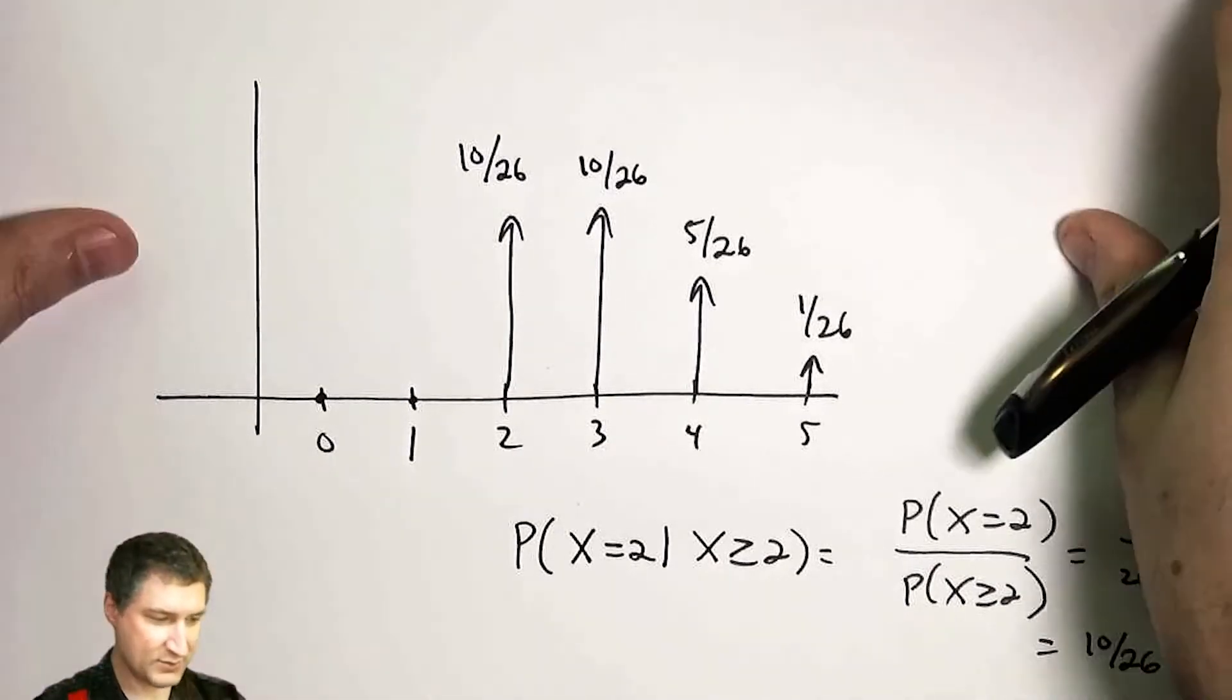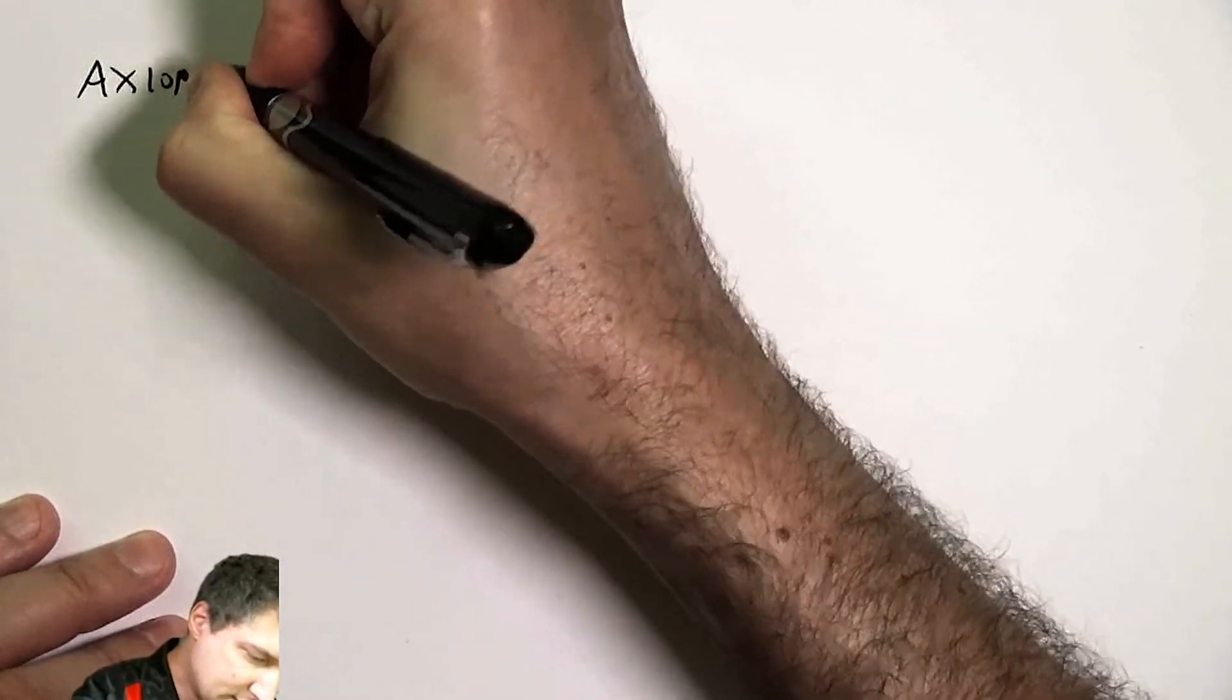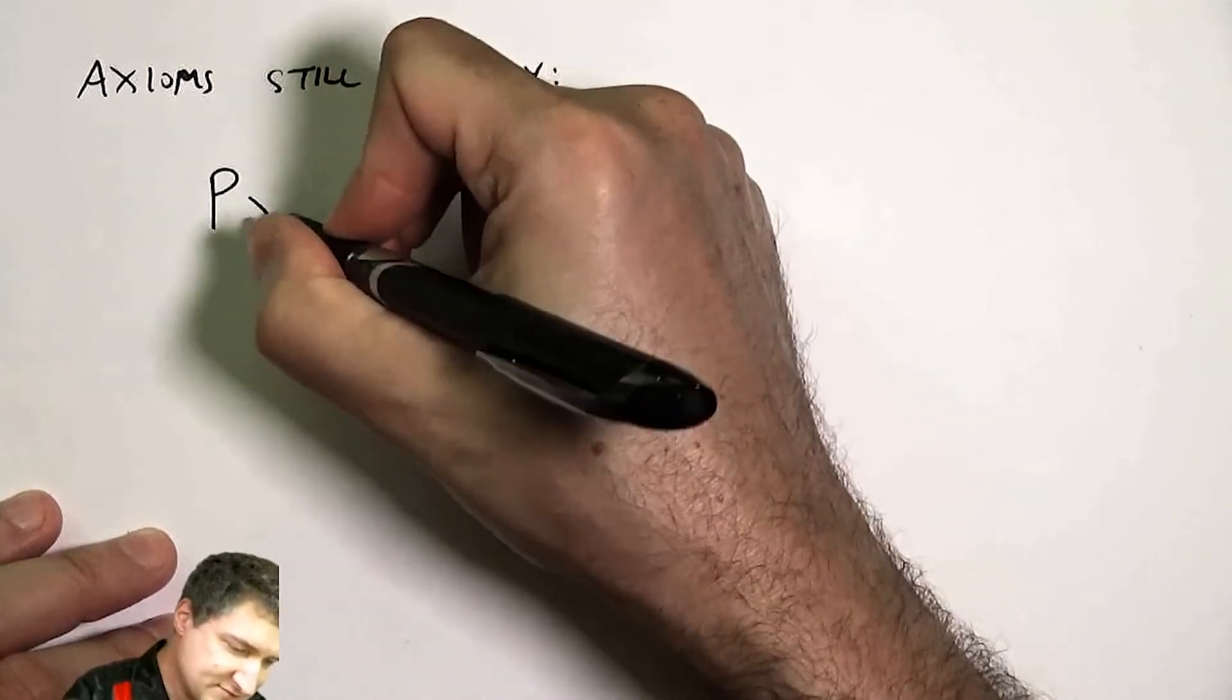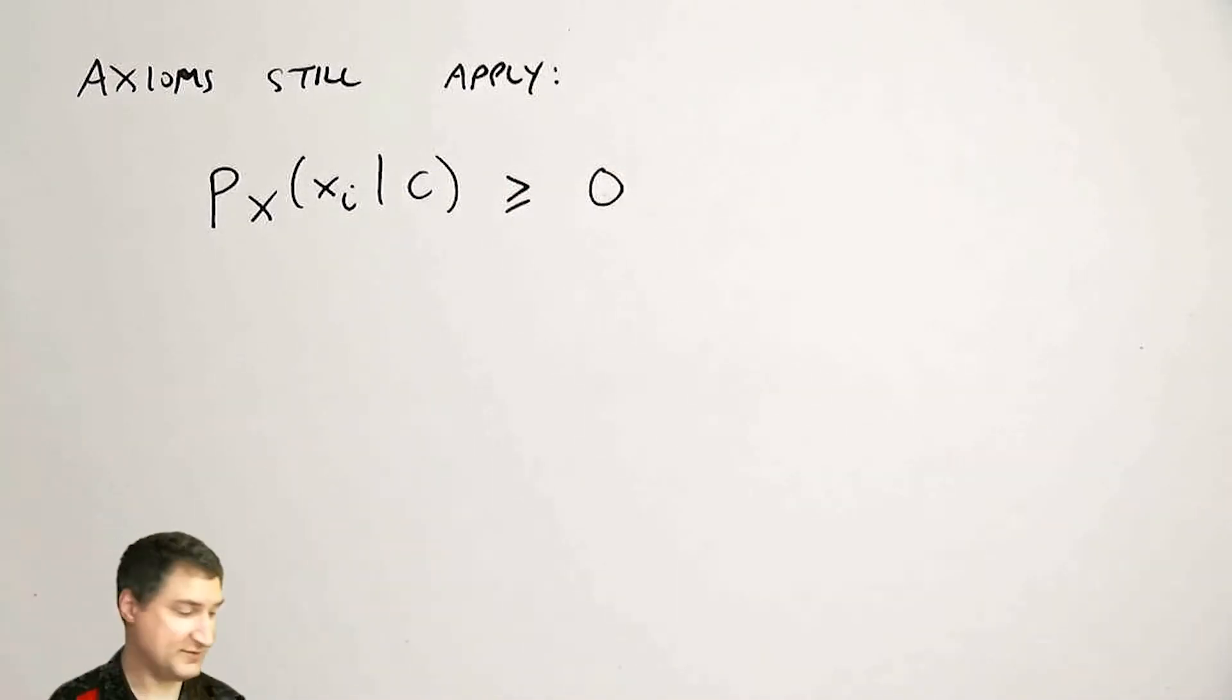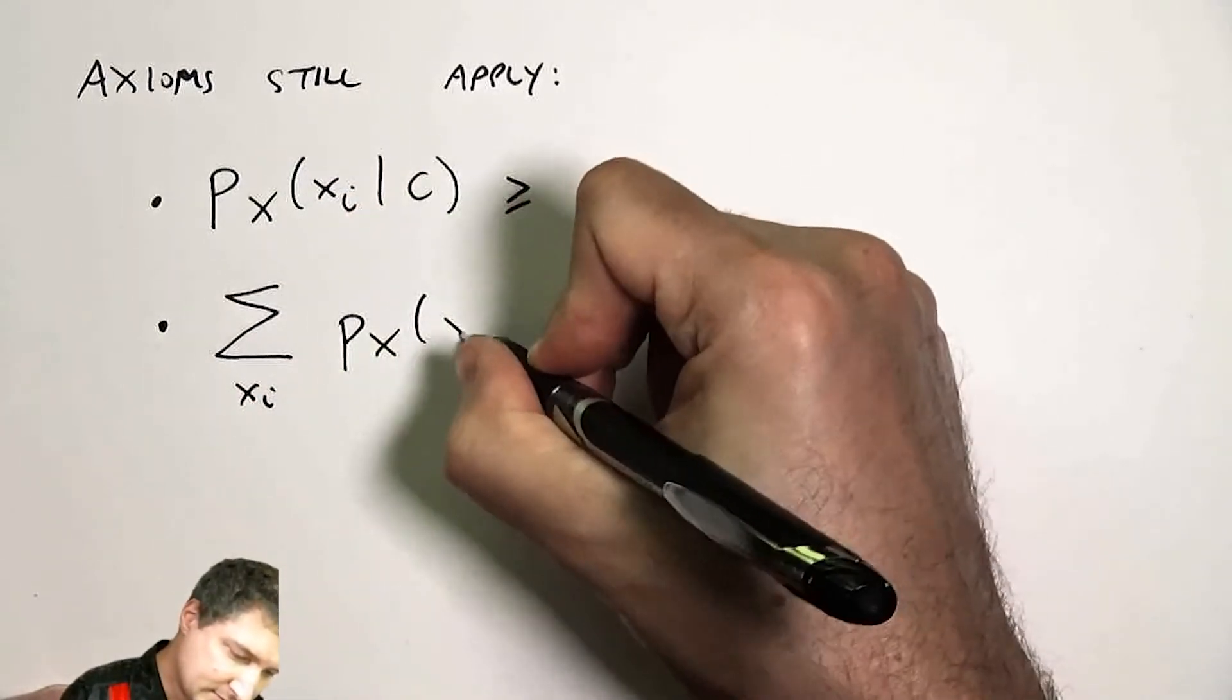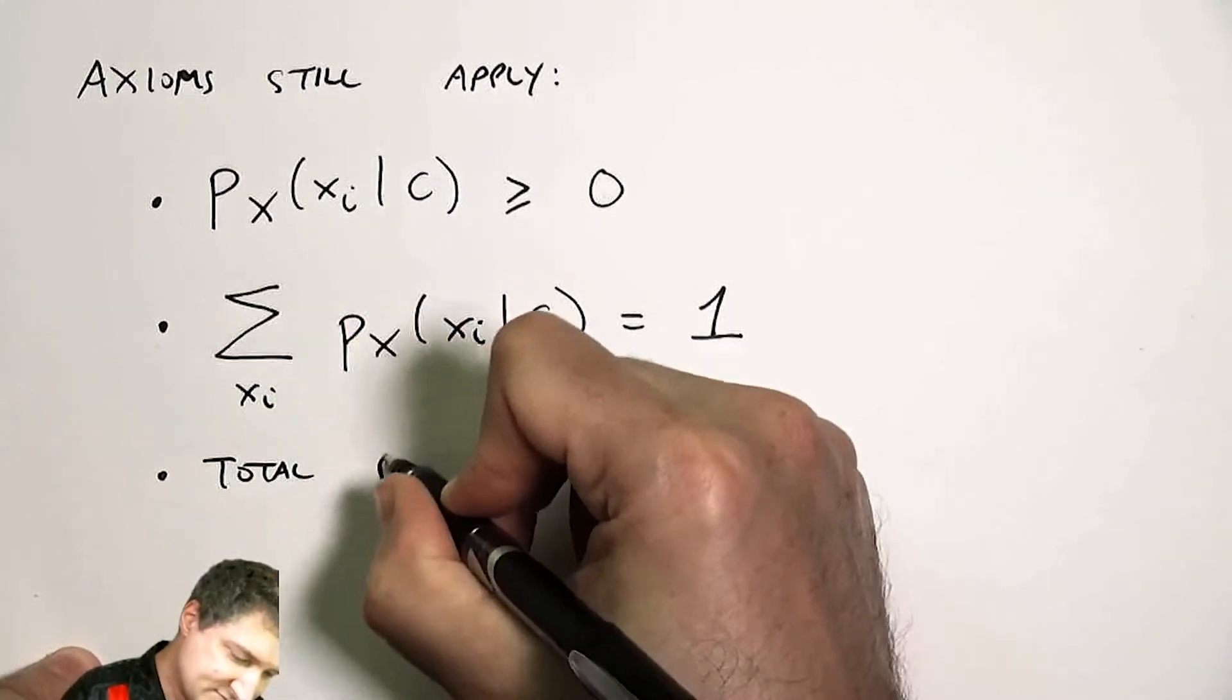So just to say what I mentioned more formally, the axioms still apply. That is, after I condition on the event, I still have to have the probabilities all be non-negative, and I still have to have that the sum of the possible outcomes all add up to one.